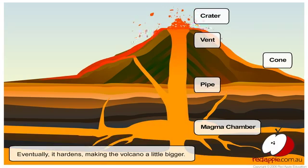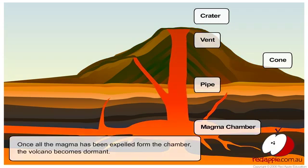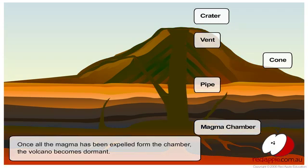Eventually it hardens, making the volcano a little bigger. Once all the magma has been expelled from the chamber, the volcano becomes dormant.